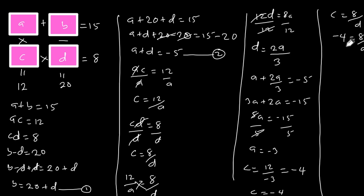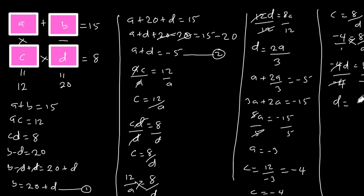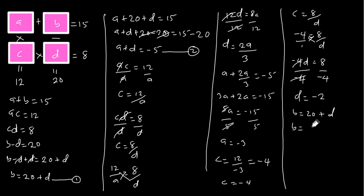Cross multiplying gives negative 4D is equal to 8. Dividing each side by negative 4, D is equal to 8 divided by negative 4, which is negative 2. Now let's find B from equation one: B equals 20 plus D, so B equals 20 plus negative 2, which equals 18.